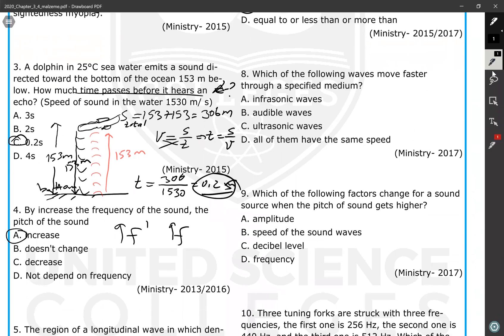Question number eight: which of the following waves move faster through the specified medium? Infrasonic, ultrasonic, audible - because all are sound waves. Sound waves are mechanical waves that travel at the same speed in the same medium, so all they have will have the same speed in that specific medium.